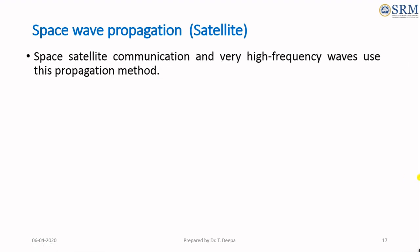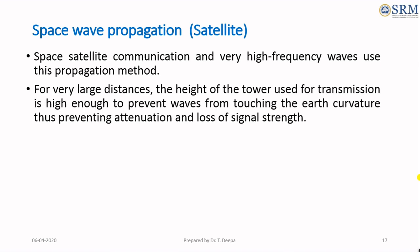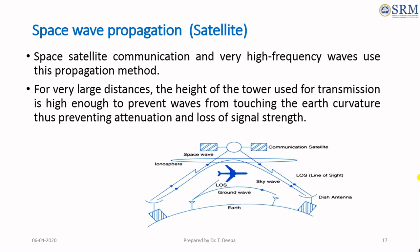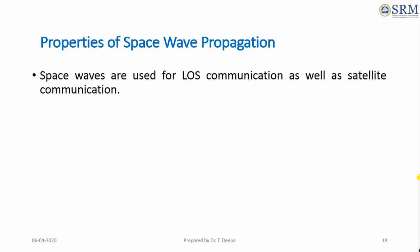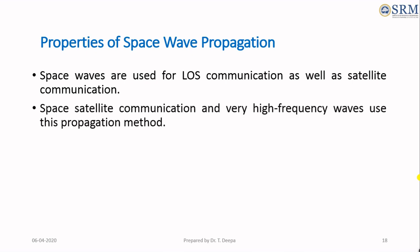Space satellite communication and very high frequency applications use this propagation method. We must ensure that for very large distances, the height of the tower used for transmission is high enough to prevent waves from touching the earth's curvature, thereby preventing attenuation and loss of signal strength. Space waves are used for line-of-sight communication as well as satellite communication, and this type of propagation uses the very high frequency waves.